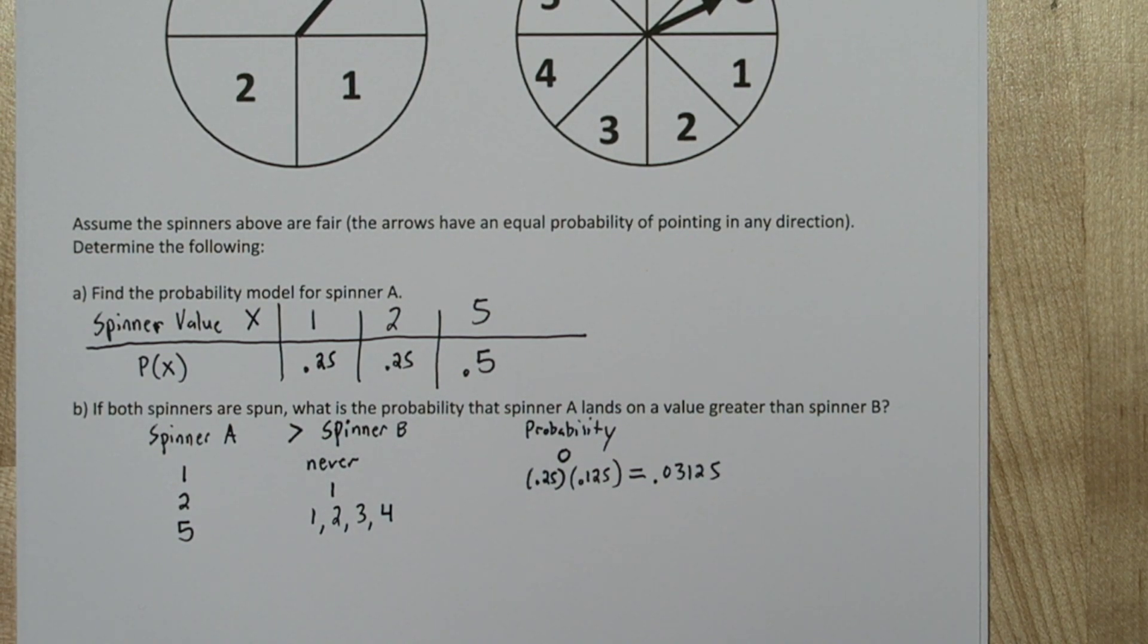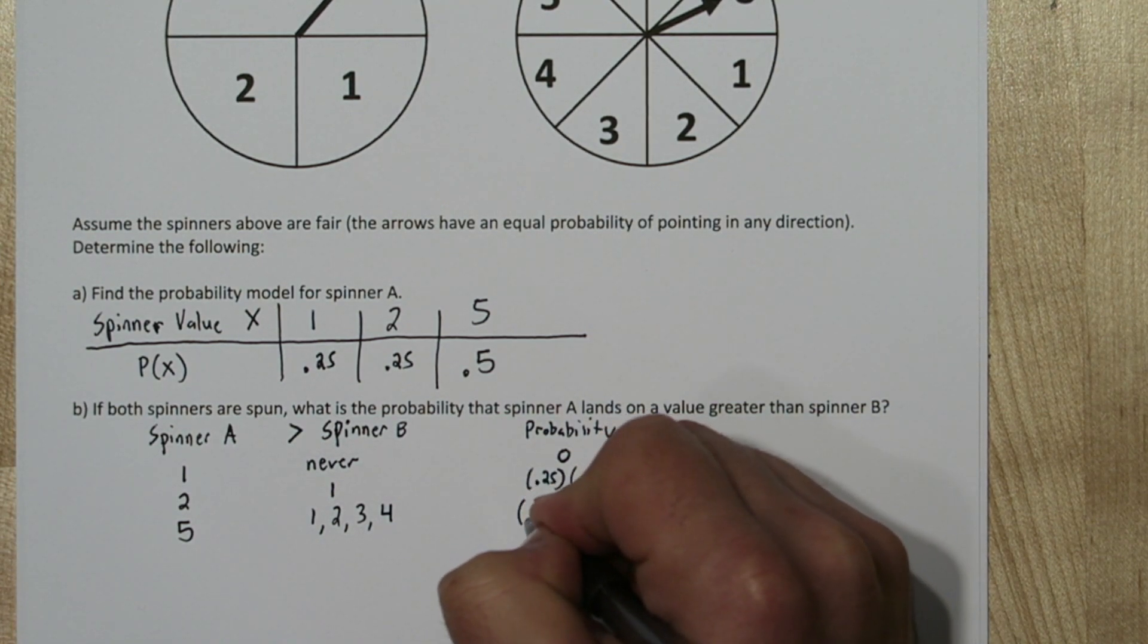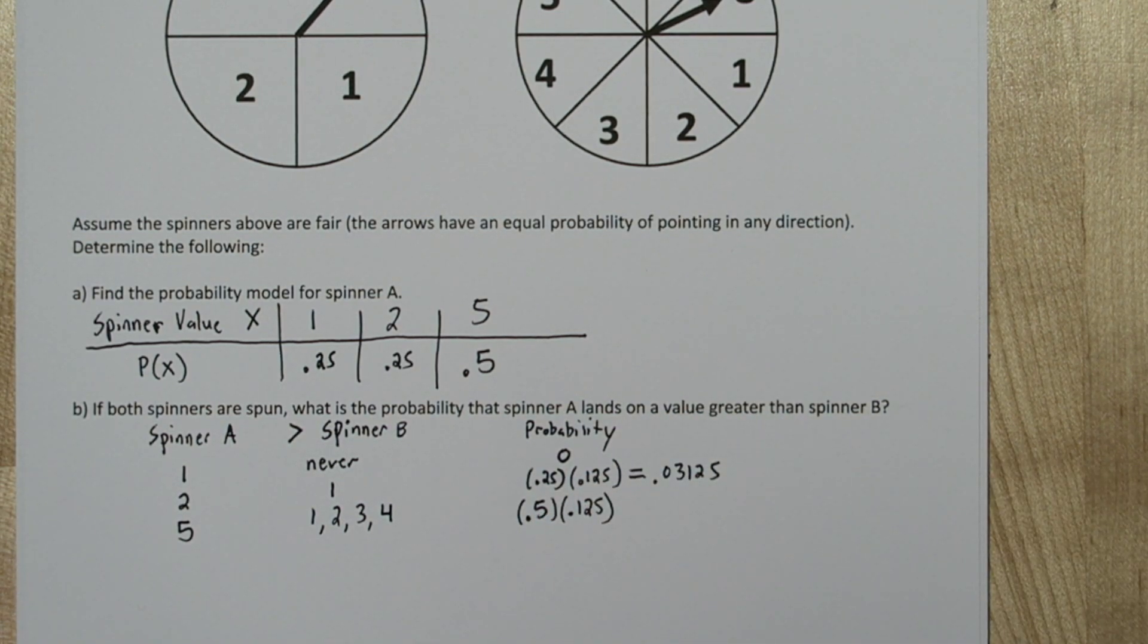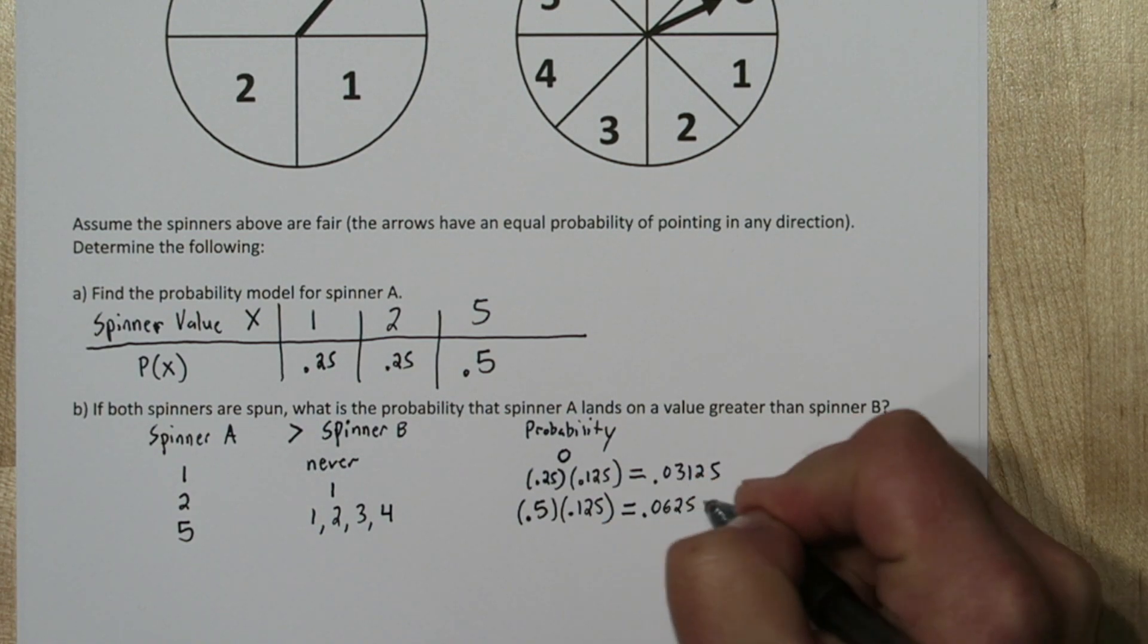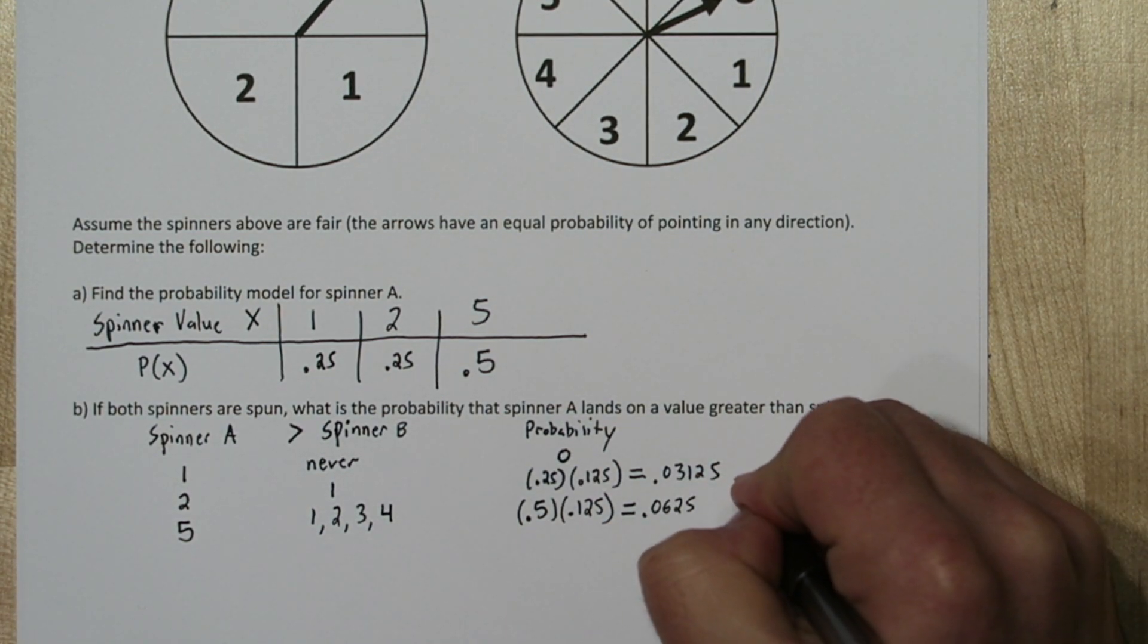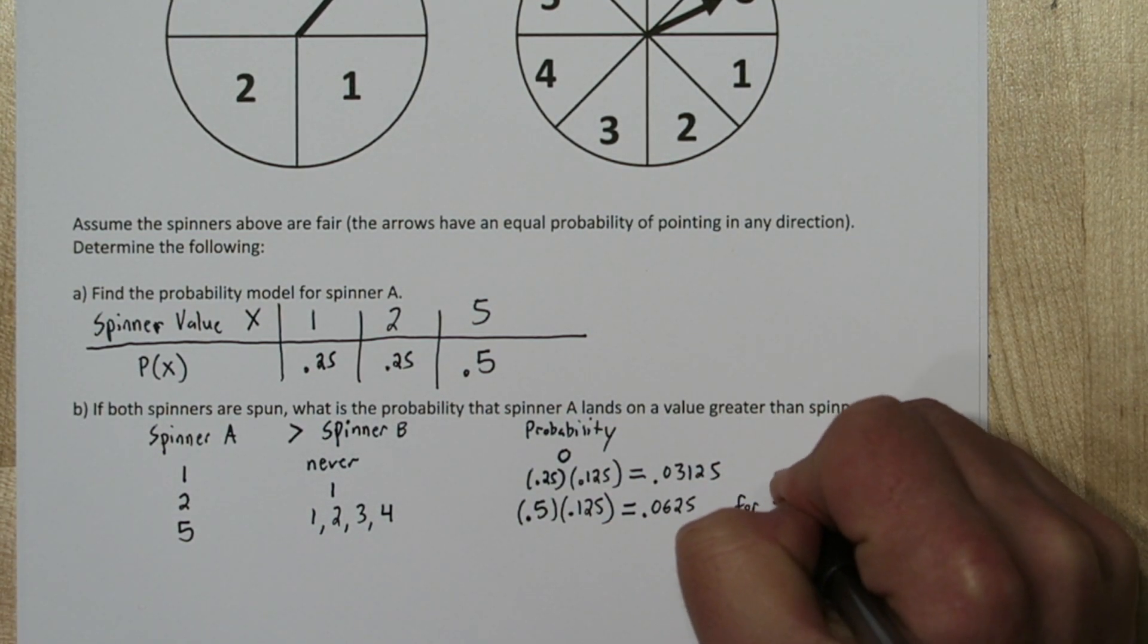Let's start by figuring out the probability that spinner A lands on 5 and spinner B lands on 1. Since they're independent, we can multiply the probability that spinner A lands on 5 (0.5) by the probability that spinner B lands on 1 (0.125). So this is our probability of getting a 5 for spinner A and a 1 for spinner B.